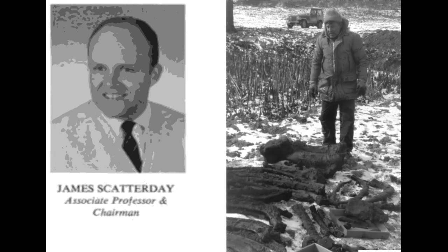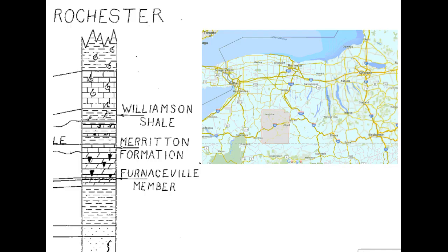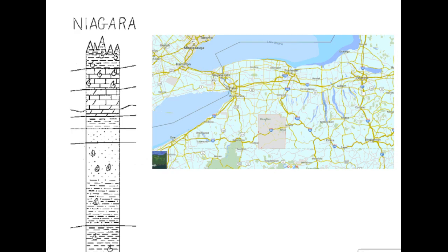This is Dr. Scatterday, my professor from SUNY Geneseo, who asked us one day to go on a field trip. He took us to the Rochester Gorge, and our job was to hike down the gorge, look at all the different rock layers, and identify the rock layers themselves. You can see on the left there's my drawing from the project. We also identified certain minerals and fossils found inside the rock, different rock types, and how thick the layers were.